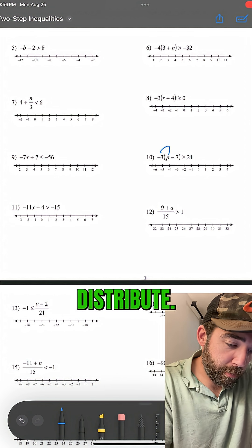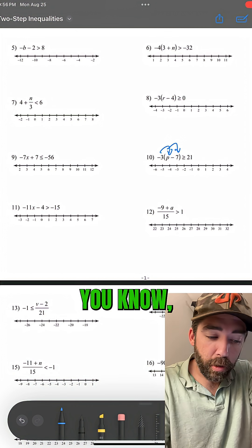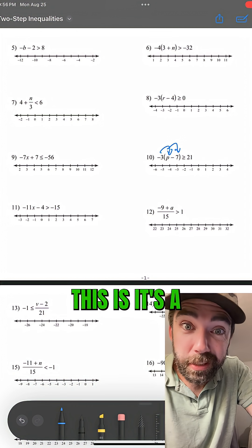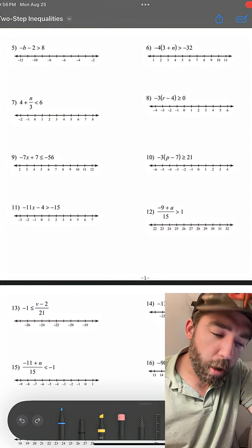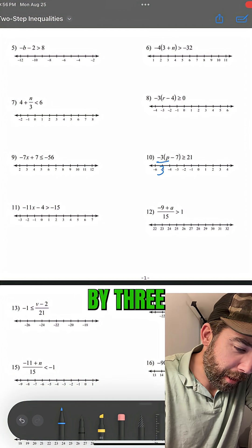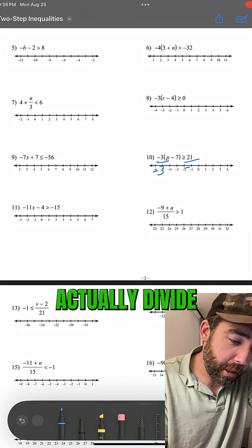We could distribute, but this would make it more than two steps, and this is a two-step equation. So instead of distributing, what if we just divide by negative 3?